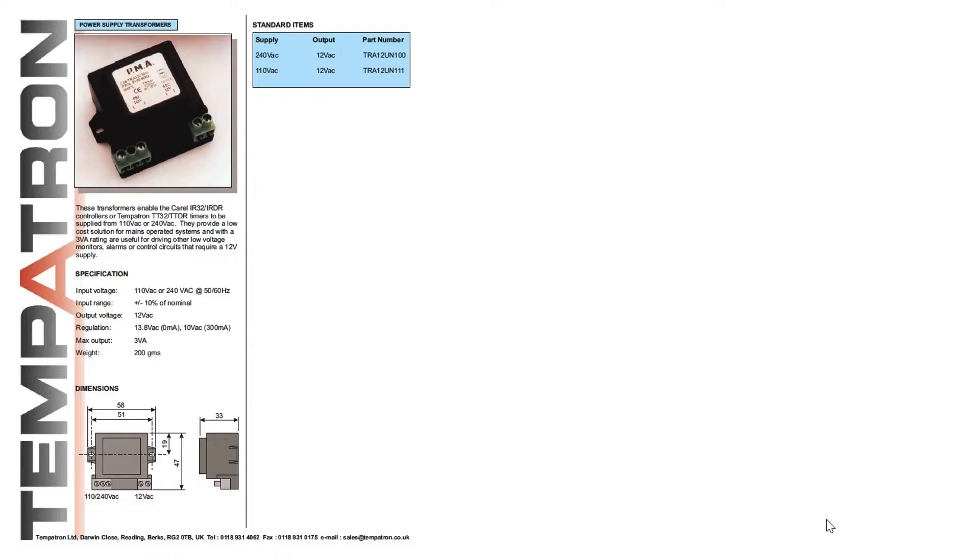Let's look at the datasheet of a transformer and see evidence of this non-ideality. This transformer has a primary and a secondary side. What I want to draw your attention to is the line on the datasheet called regulation. We're going to be applying a constant voltage to the primary side. In the case of this video, I'm going to apply 230 volts to the primary side. On the secondary side, you can see here under regulation that we're going to get 13.8 volts RMS at 0 amps. That's the no load case. But that voltage at the secondary side is going to drop to 10 volts if we draw 300 milliamps from the transformer.